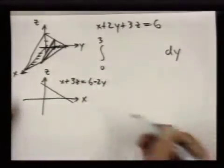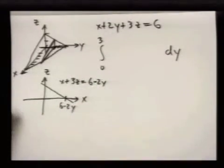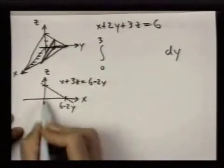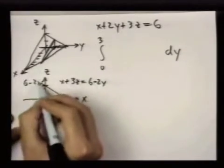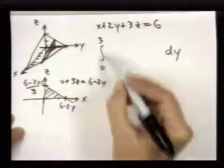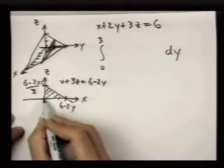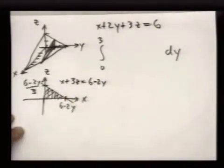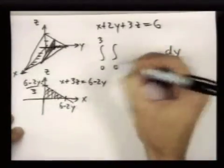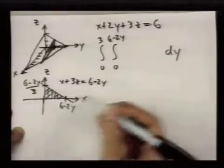And now when z is 0, x is equal to 6 minus 2y. And when x is 0, z is equal to 6 minus 2y over 3. So this is the region we have if we cut with respect to y first. And now I could think about cutting this up this way. So in this region, x goes from 0 to there, 0 to 6 minus 2y.